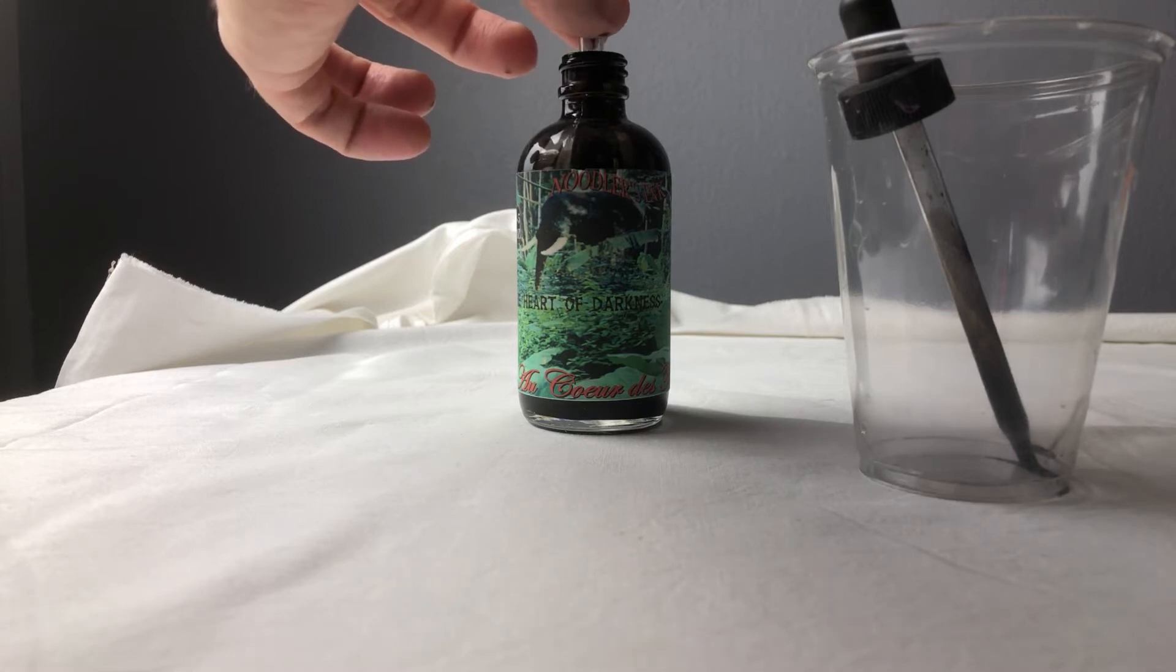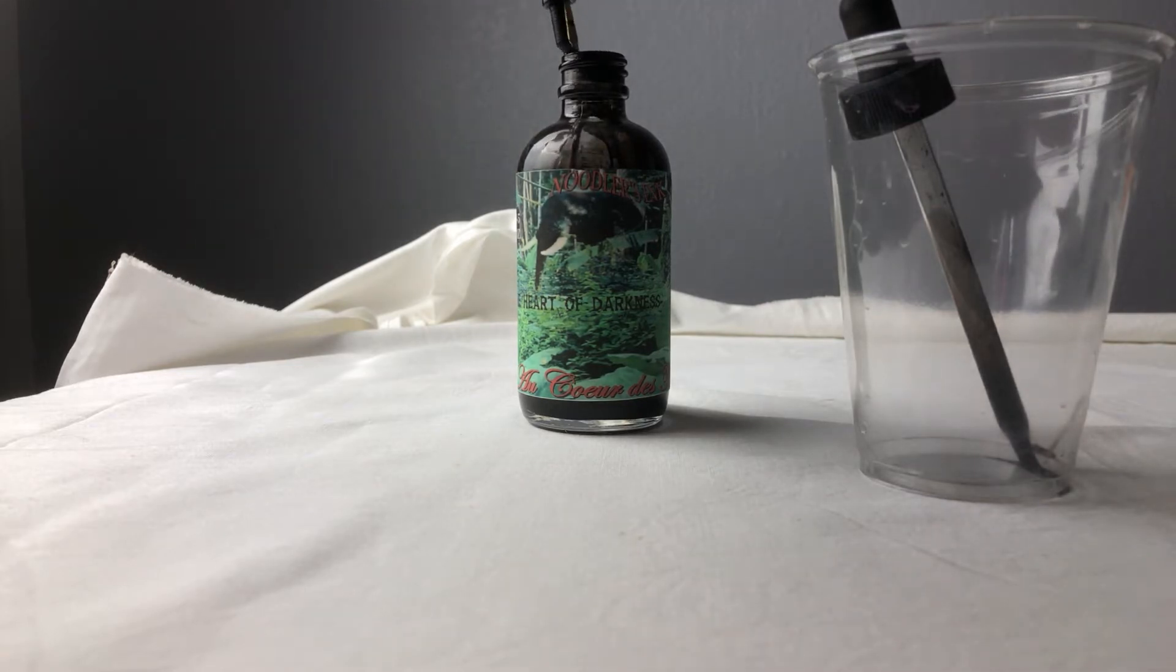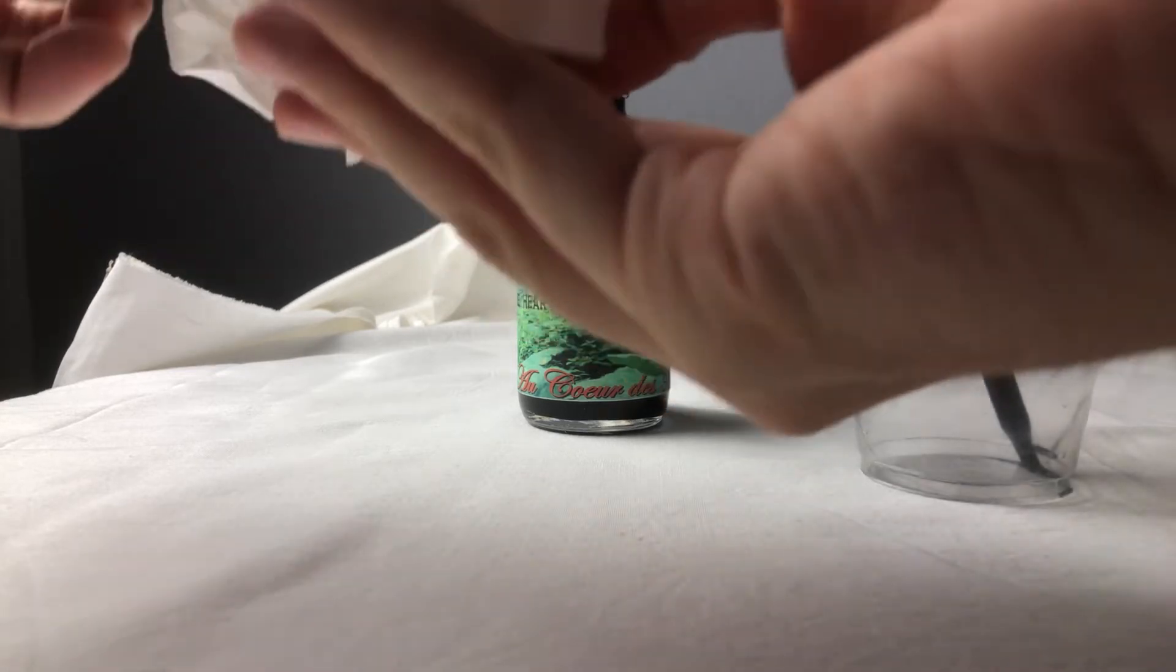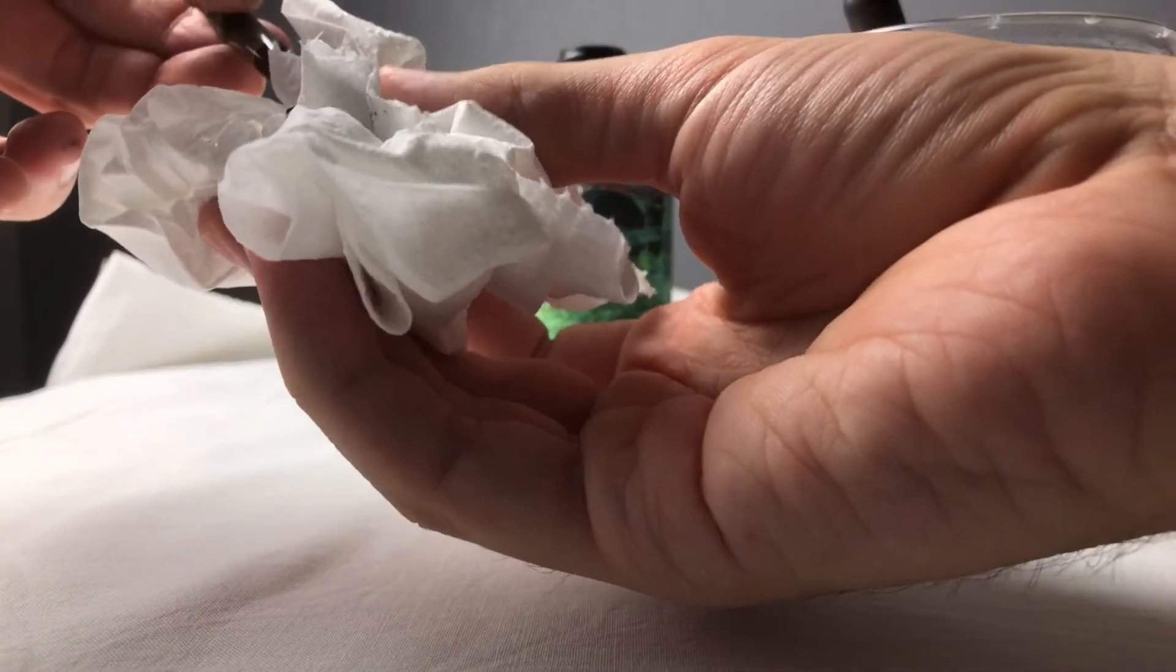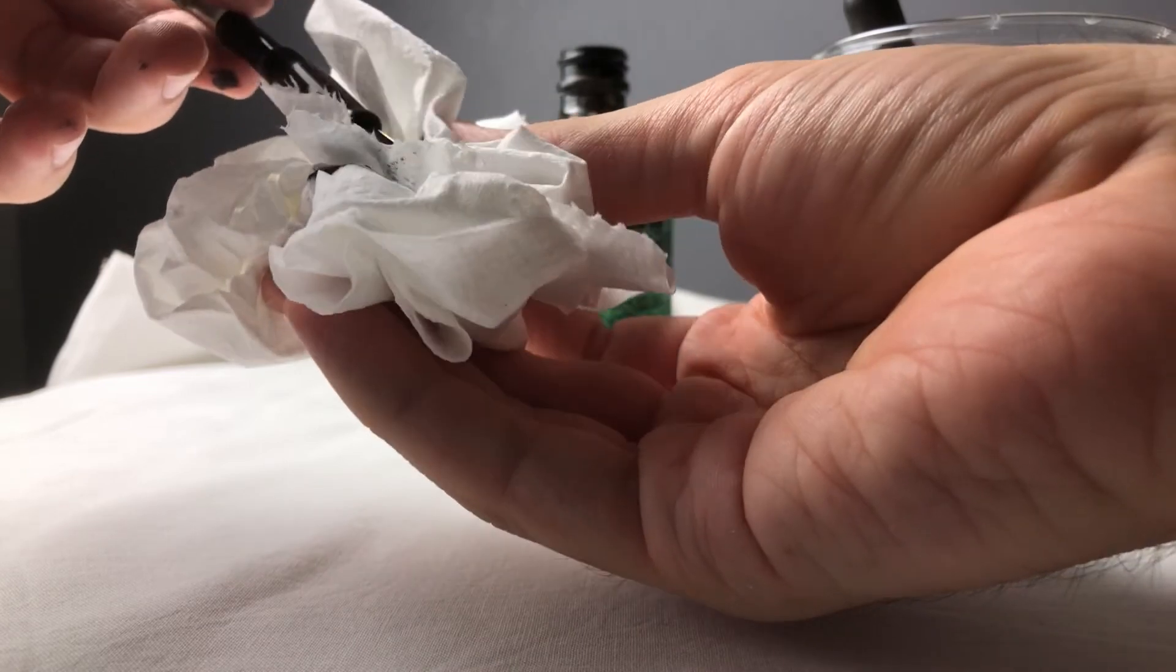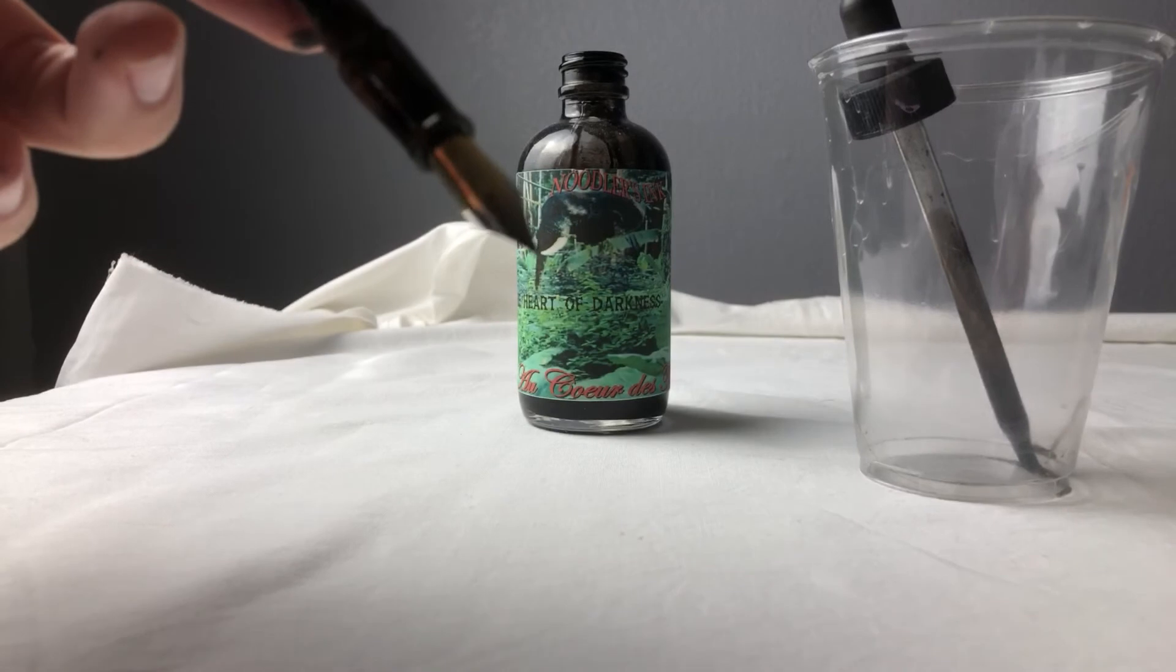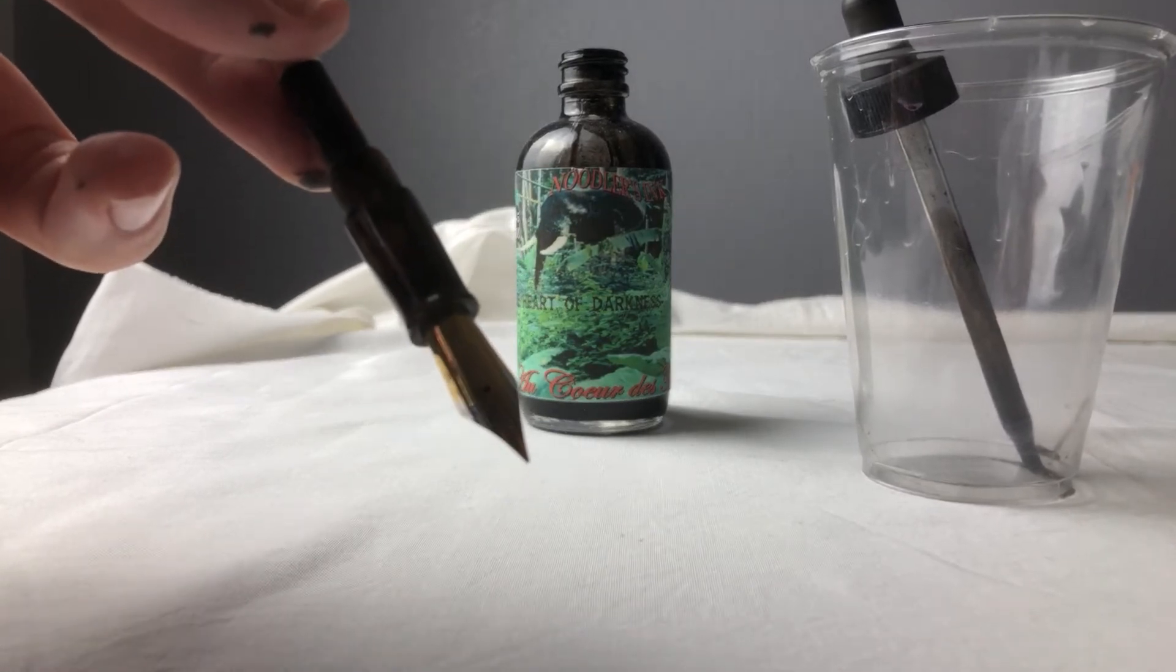So let's just see if I can get it to fill. Hopefully we won't have the problems like last time. So yeah, this is a regular cartridge converter type filling system. Seems to have worked pretty well. All right, I'm going to blot this off. And we will be ready to do a drawing sample with this here pen right there. Looking good.